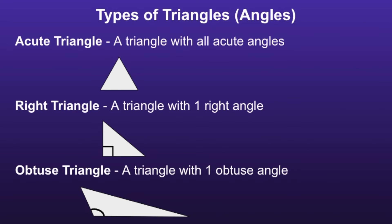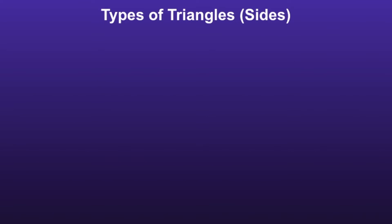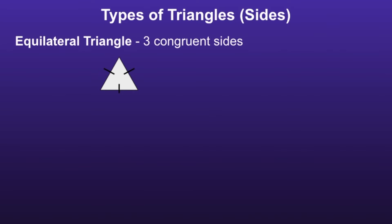An obtuse triangle is a triangle with one obtuse angle. Another way to classify triangles is based off of their side lengths. An equilateral triangle has three congruent sides, and congruent sides are sides that are the same length.